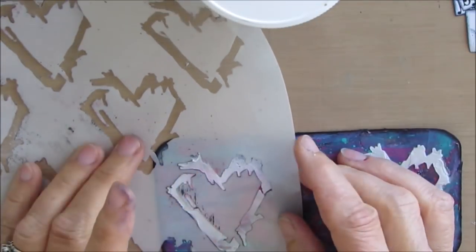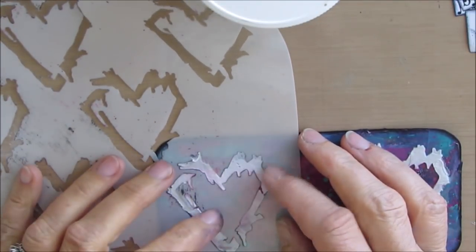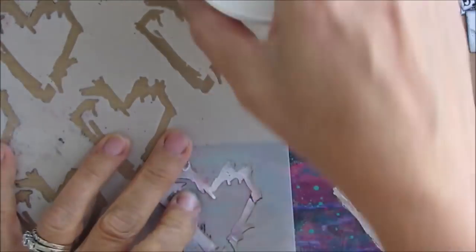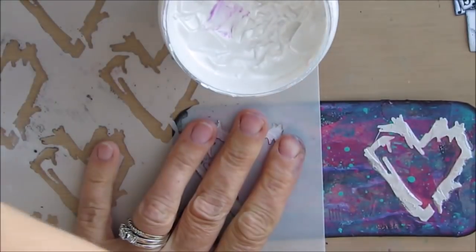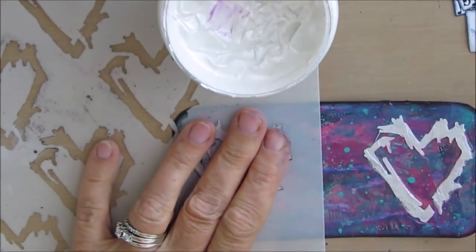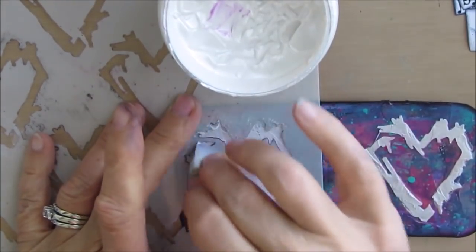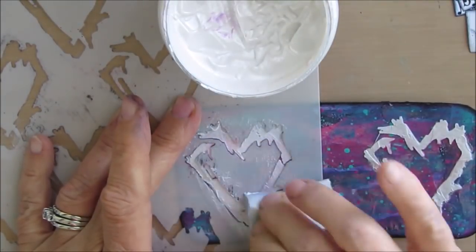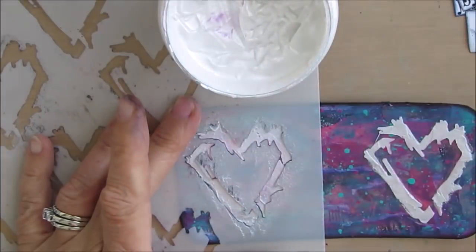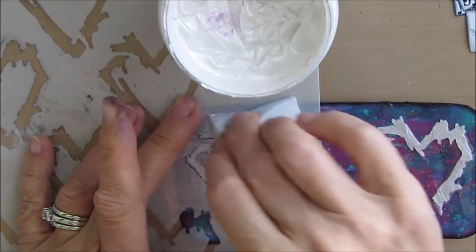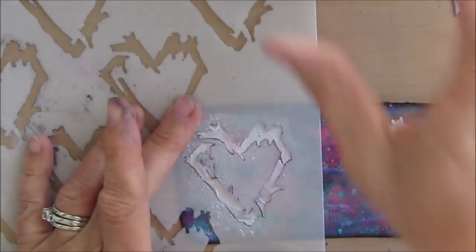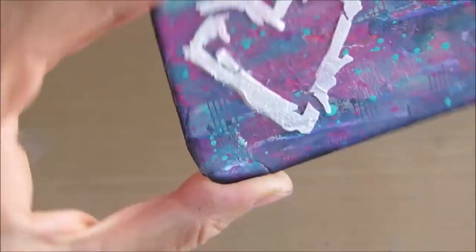I'm putting the stencil back on, and I'm going to apply a coat of Shimmery Goodness. This is also from Crafters Workshop. It's kind of a pearlized medium. I just want this to stay white, but kind of have a little bit of shimmer to it. And this product does that. I've also stenciled with it, instead of using modeling paste.